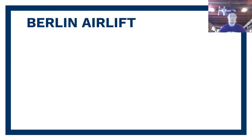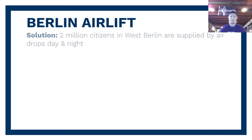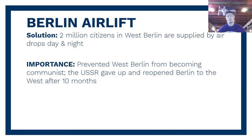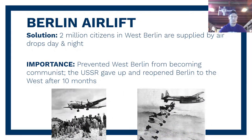The solution Truman came up with deserves credit — he's going to supply 2 million citizens in West Berlin by airdrops, day and night, for a series of years. This prevents West Berlin from becoming communist while also pressuring the Soviet Union to give up and eventually reopen Berlin to the West. The roads eventually open back up, but airlifts continue even after those 10 months. However, the Soviet pressure on Berlin to become part of communist Eastern Germany ends after those 10 months — showing Truman's ability to act creatively under pressure, avoiding confrontation while still looking strong.